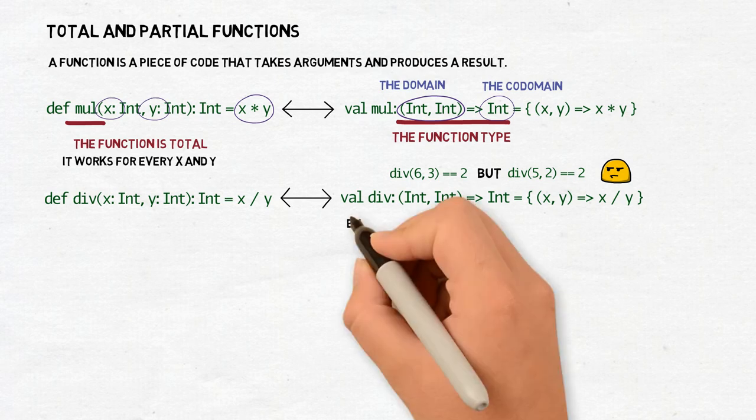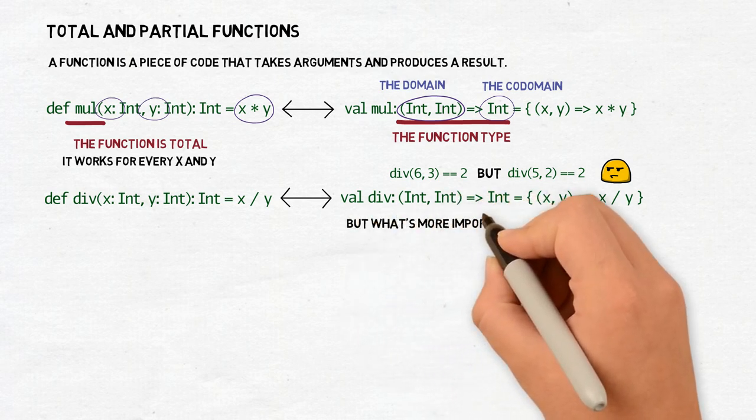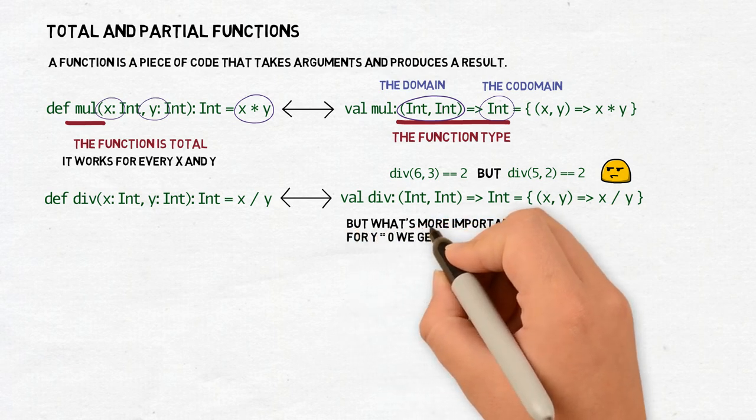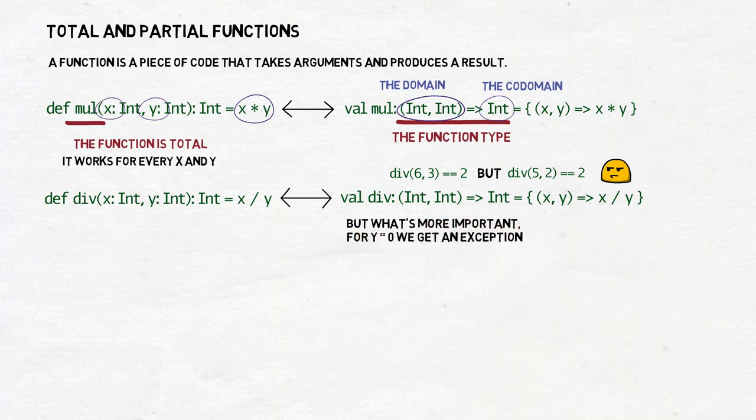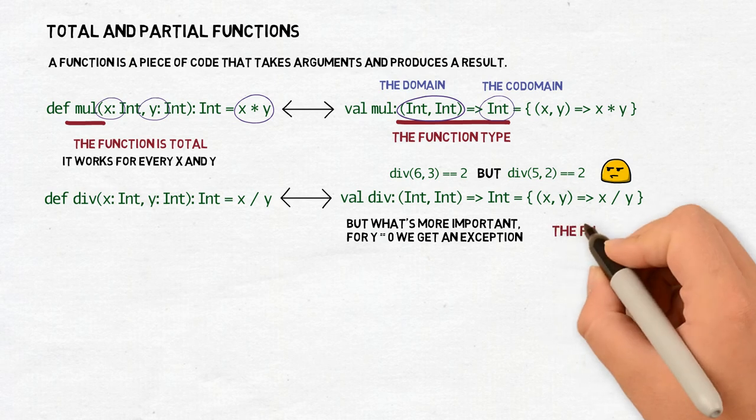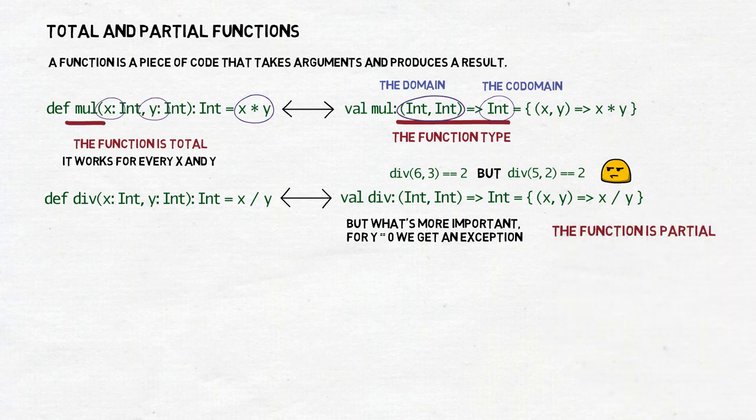More importantly, for y equal to 0, another weird thing happens. We get an arithmetic exception. It means that a division of a pair of integers which produces an integer is a partial function. It does not work for all pairs of integers.